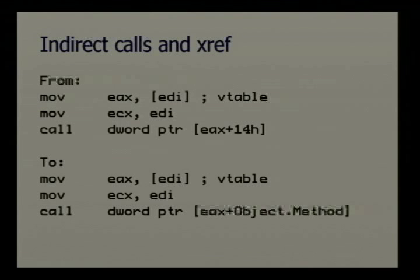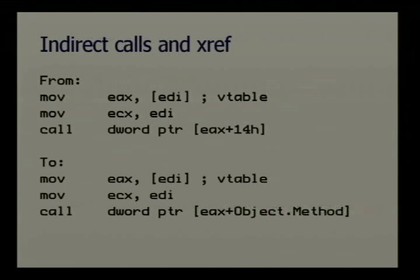Here's an example of an indirect call. In the dead listing, EDI has a pointer to a vtable loaded into EAX. The next line copies EDI into ECX — ECX is the 'this' pointer. Then it says 'call dword ptr [EAX+14h]'. I have no idea what that is from the dead listing. But if we find the vtable and set breakpoints, it becomes 'object.method' — exactly what we want. We don't have unresolved indirect calls. Find a method you think has a vulnerability, hit X for cross-references, and you have the call path — everyone calling it — and you can backtrace to see where user input is coming from.